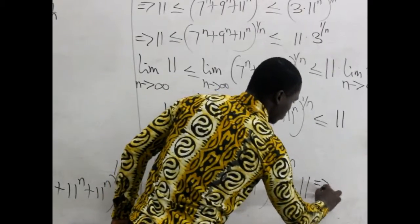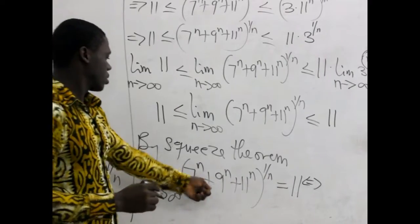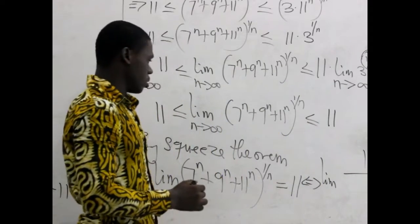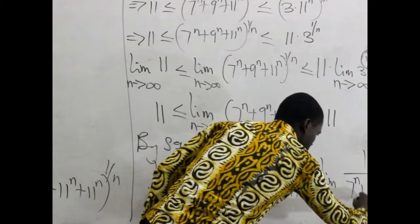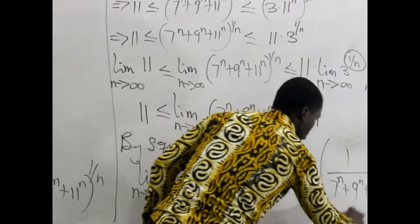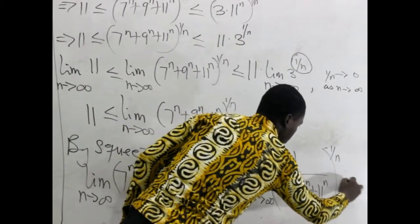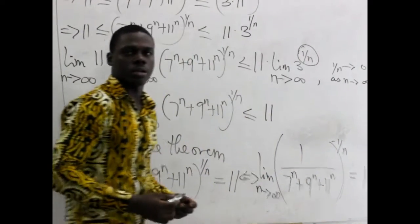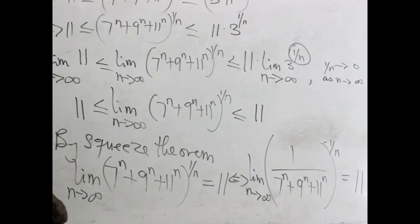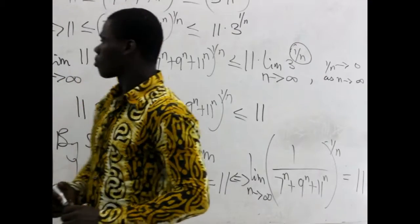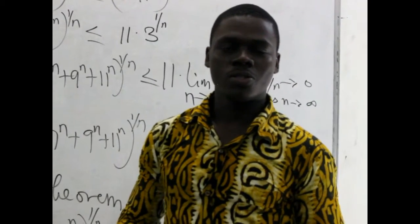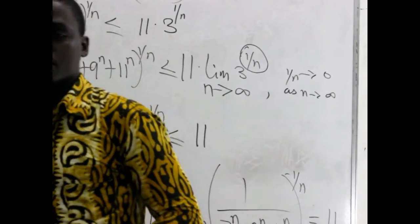This is also equivalent to writing the original form with 1 over 7^n + 9^n + 11^n as n approaches infinity. Thanks very much for watching this tutorial. Until we meet again, keep calculating and solving questions on introductory analysis. Thank you very much.